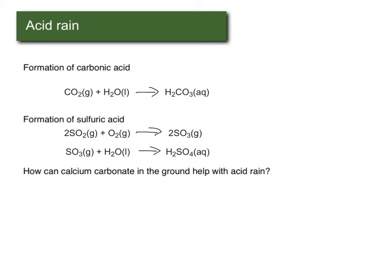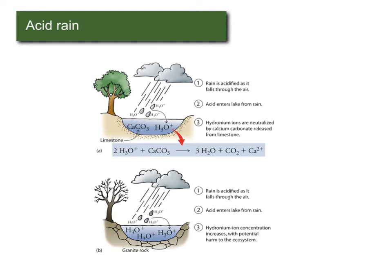Calcium carbonate, found in limestone in the ground and in some freshwater lakes, can actually help reverse the effects of acid rain. As shown in this figure, limestone combines with H3O+ — what makes water acidic — producing water, carbon dioxide, and calcium ions. So a lake lined with limestone can naturally resist acid rain, though it does release CO2 back into the air.